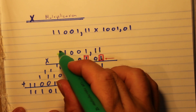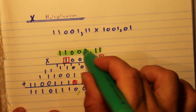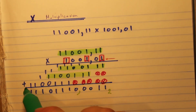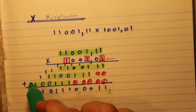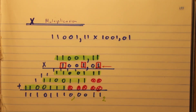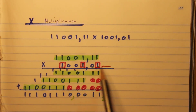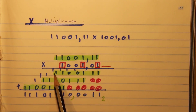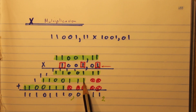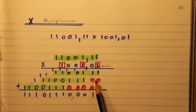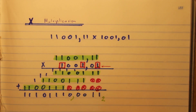To recap: the ones in the bottom number indicate when you need to write down the top number. Wherever a one appears, you write the top number aligned to that position. For the next one you write it there, and the last one you write it there. Zeros are placed in the skipped positions to show you've skipped them, and then you add up all the rows.